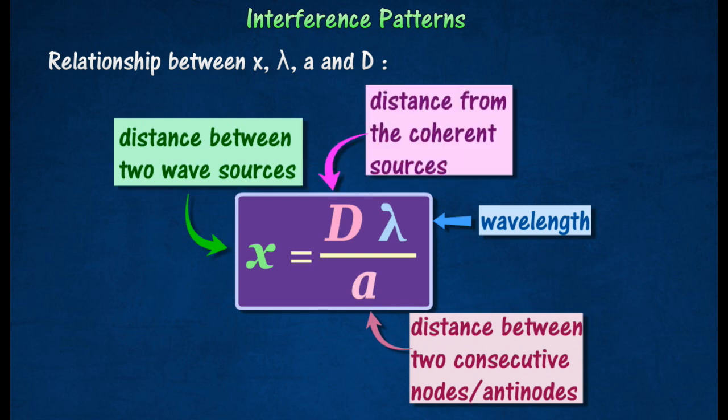The perpendicular distance from the coherent source to the position where x is measured D.